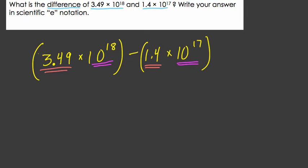Alright, so let's do that. So over here, I will change that exponent. So we have 1.4 times 10 to the 17th. I don't want 17. I want 18 so I can add these things directly.